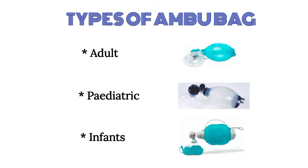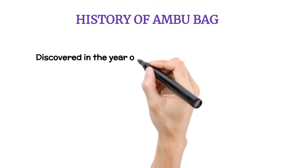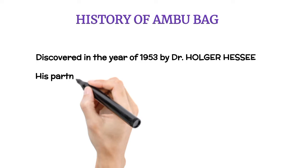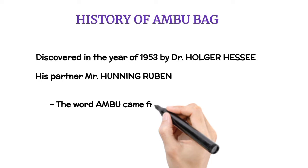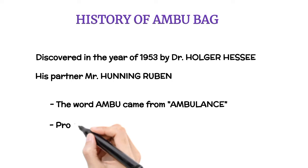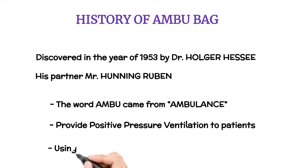History of the Ambu Bag: it was discovered in 1953 by Dr. Holger Hesse, a German engineer, and his partner Mr. Henning Rubin, an anesthetist. The word 'Ambu' came from 'Ambulance.' It is a handheld device commonly used to provide positive pressure ventilation to patients who are not breathing or not breathing adequately. Using an Ambu Bag to ventilate a patient is called 'Bagging.'